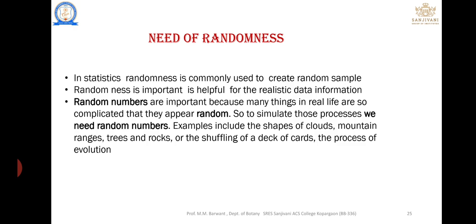The third need is that a random number table is important because real life is so complicated. Examples include the shapes of clouds, mountain ranges, trees, rocks, shuffling a deck of cards, and the process of evolution. So the first point is that randomness is used to create a random sample. The second is that it is important for obtaining realistic data information in real life.